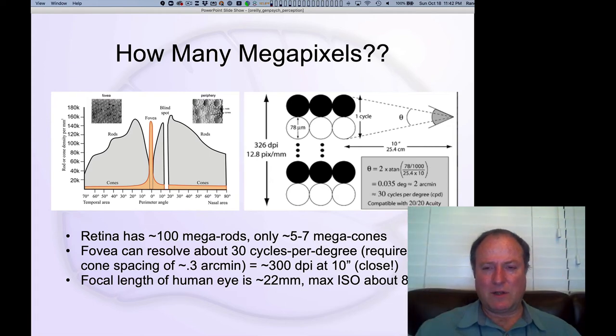We can understand essentially how high-res our visual system is - the resolution of our visual system - by computing how tightly packed those cells, the cones, are inside our fovea, and then translating that into what kind of resolution we would be able to distinguish at a typical viewing distance.